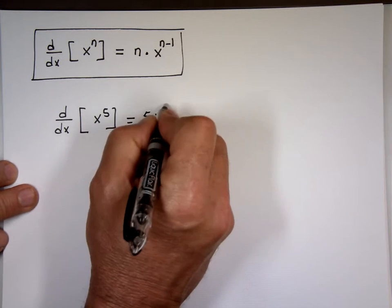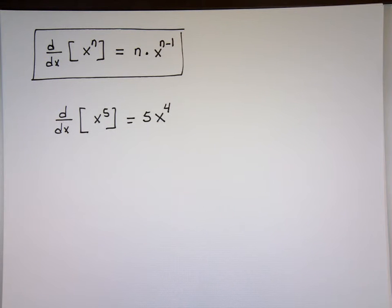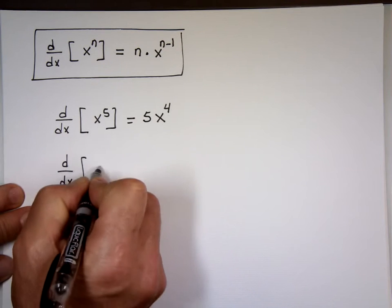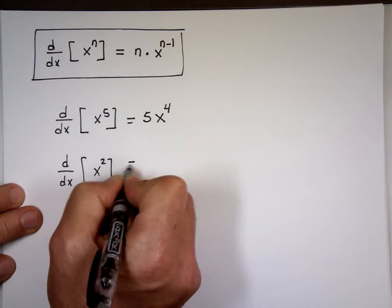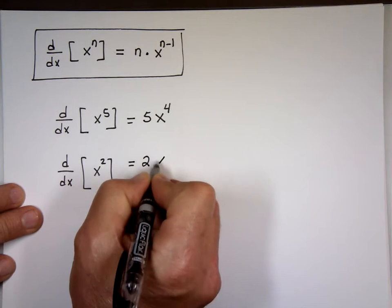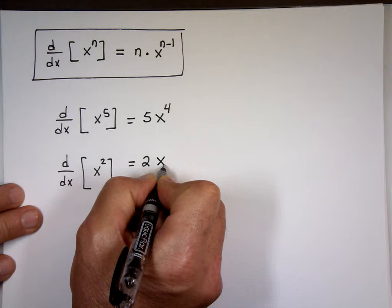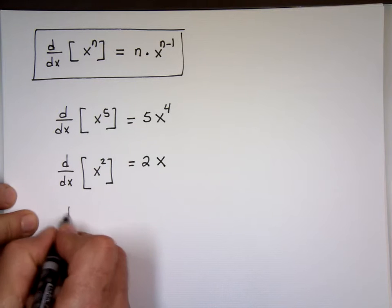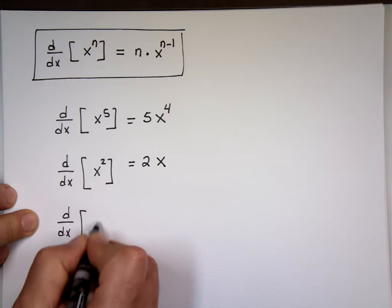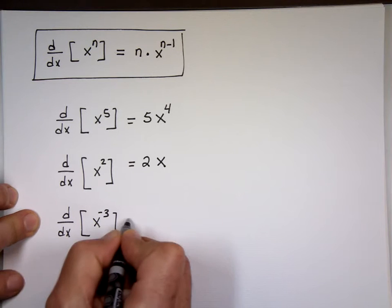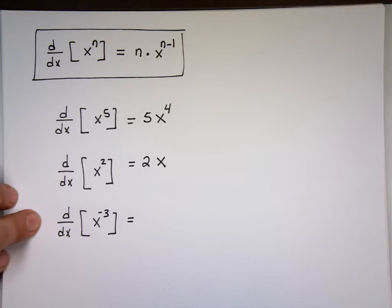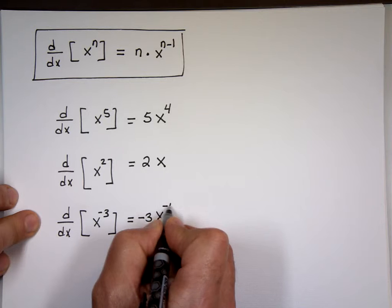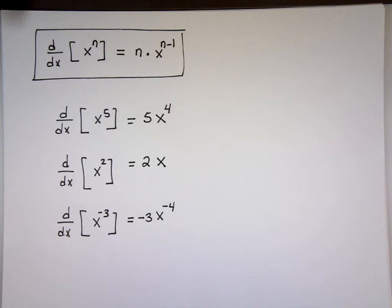What's 5 minus 1? 4. So the derivative of x to the 5th is 5x to the 4th. The derivative of x squared: bring the power to the front — that would be 2 — and reduce the power by 1, which is 1. I don't have to write the 1. The derivative of x to the negative 3: negative 3x to the negative 4. Always subtract 1 from the power.